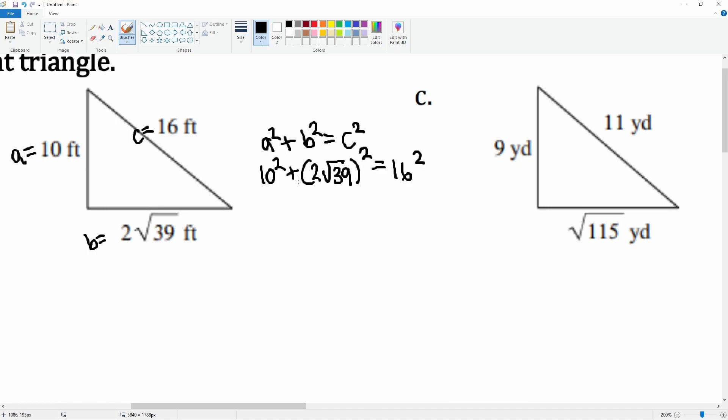10 squared plus parentheses 2 radical 39 close the parentheses squared equals 16 squared. When you make that substitution, make sure you put it in parentheses. This is 100; if you plug this into a calculator it should be 4 times 39. Let me double check: 2 radical 39 squared is 4 times 39, so 156 equals 16 squared which is 256. 256 does equal 256, so this is also a right triangle.